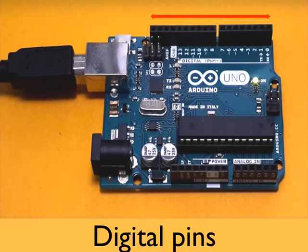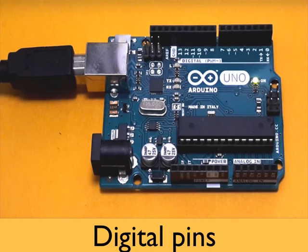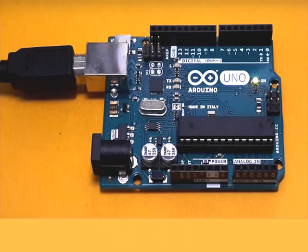These are digital pins. Each of these can be programmed as either an input or output. Digital means they can be on or off, high or low — for example, to dim an LED or to generate audio signals.